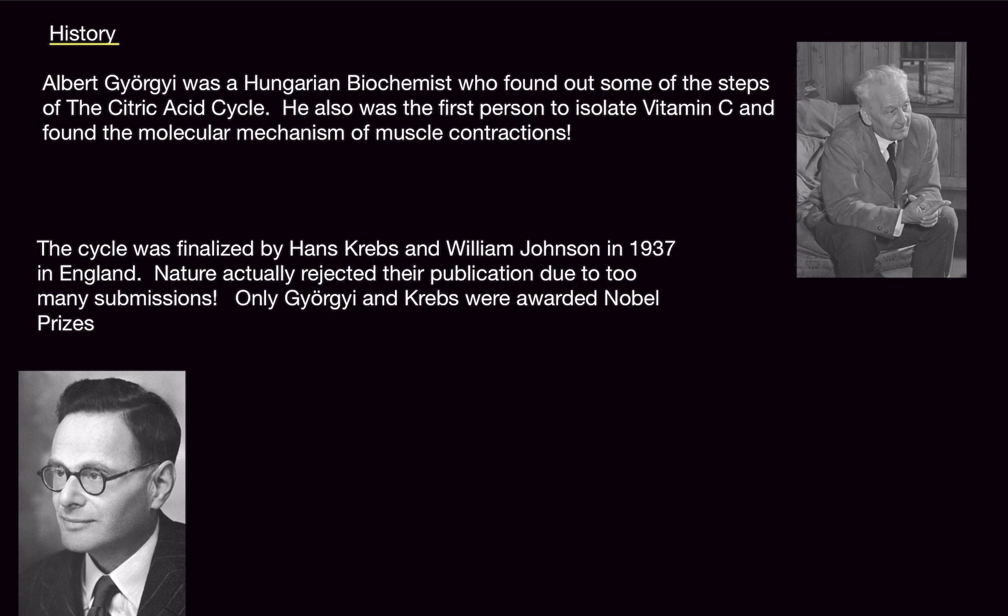Now, the cycle was actually finalized by Hans Krebs and William Johnson in 1937 in England. Here's a little fun fact. Nature, which was where people publish their papers, actually rejected their publication due to too many submissions at the time. They had so many other researchers trying to publish their papers. And Nature actually rejected these people because they had a little backlog here. But what did they regret? Because this was the Krebs cycle, the citric acid cycle.